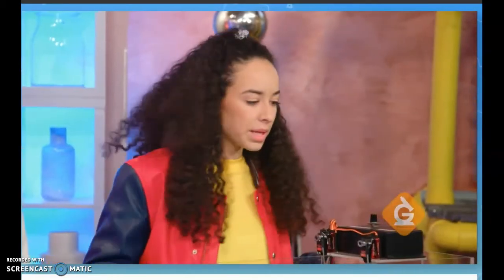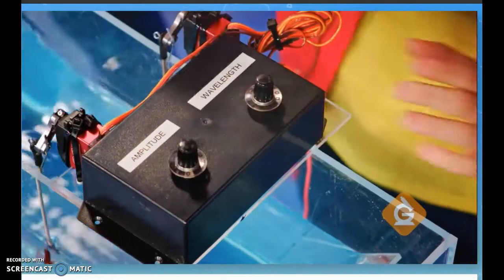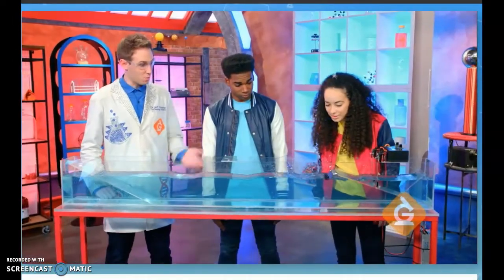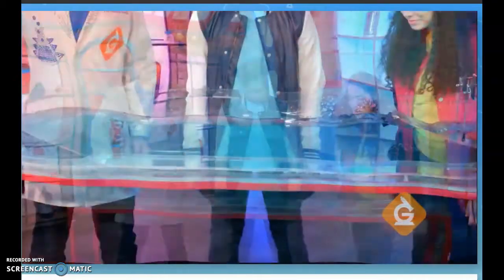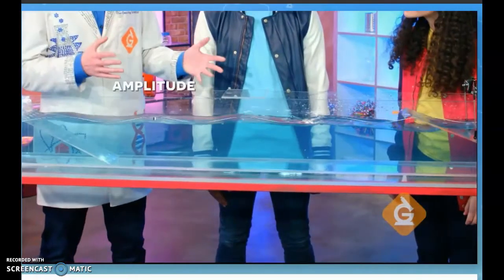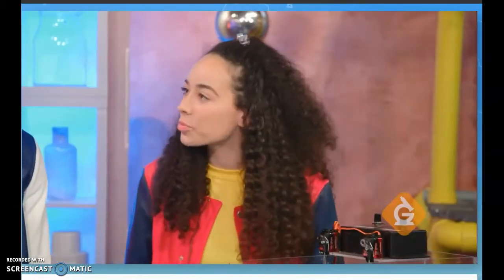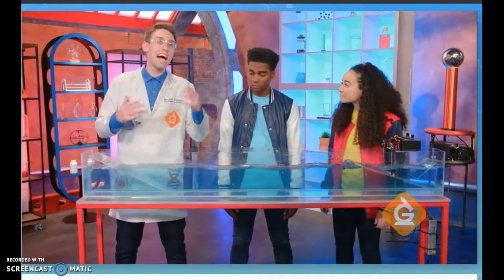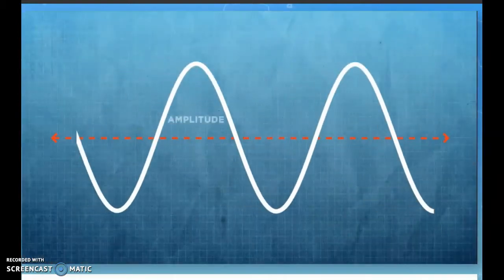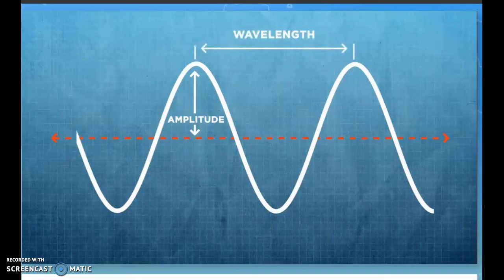What if I change the knob labeled amplitude? That adjustment made the wave smaller. Amplitude is how tall or short a wave is. Scientists can measure both amplitude and wavelength. The amplitude is the distance from the wave's peak to its resting point, which is the level of calm water. The wavelength is the distance from peak to peak.